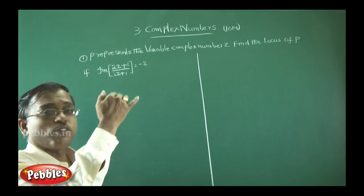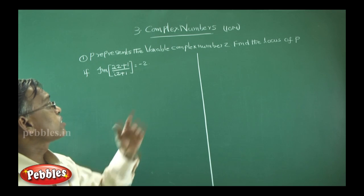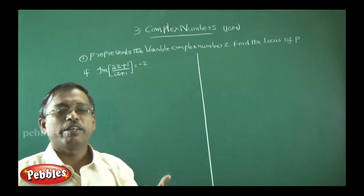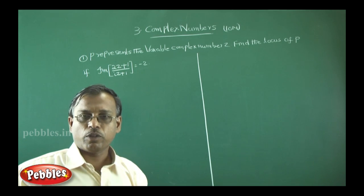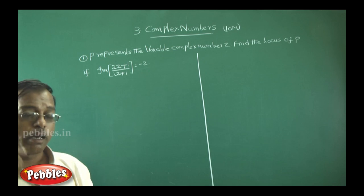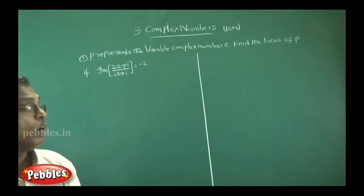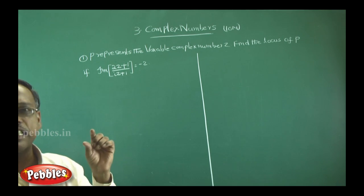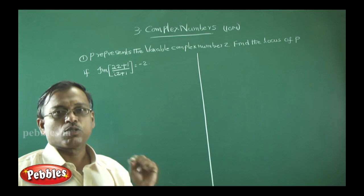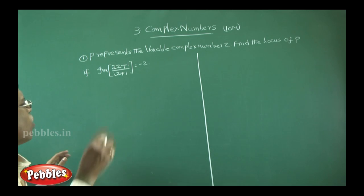The meaning of locus here is the path traced by point P. It might be a straight line, a circle, or a parabola — whatever it may be. The locus means the path traced by the given point. Now we will see the solution.